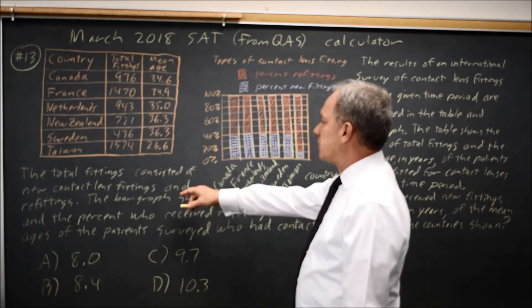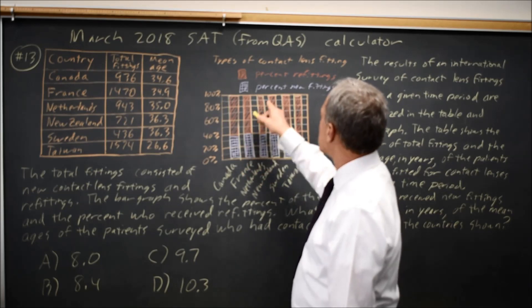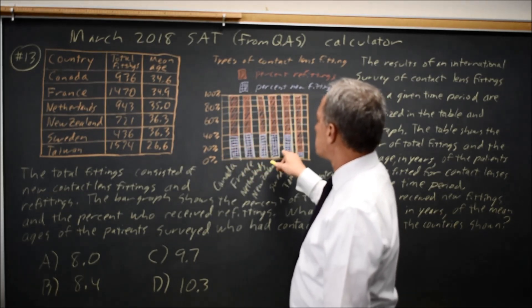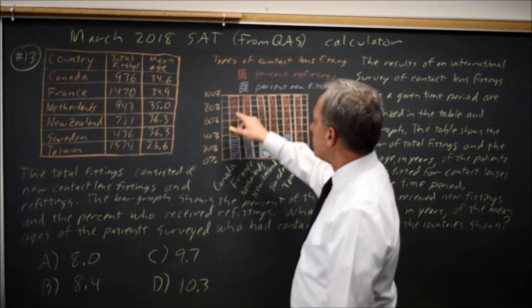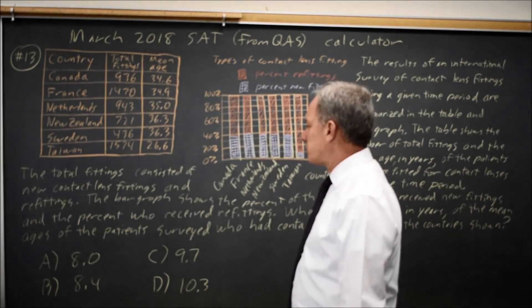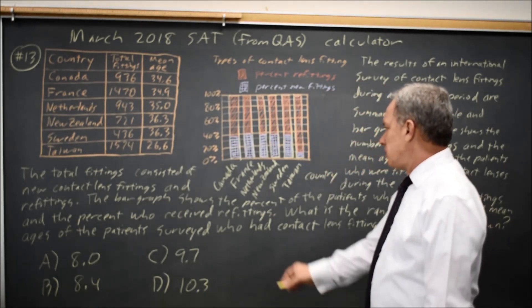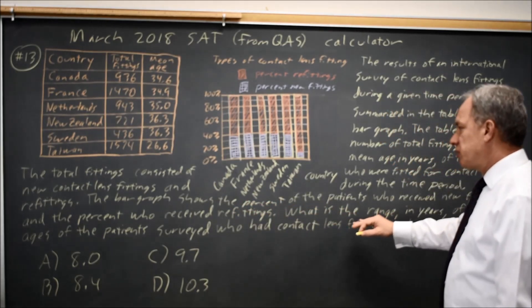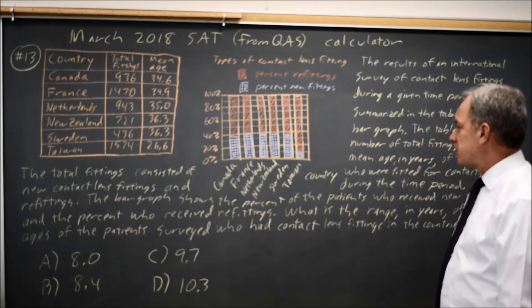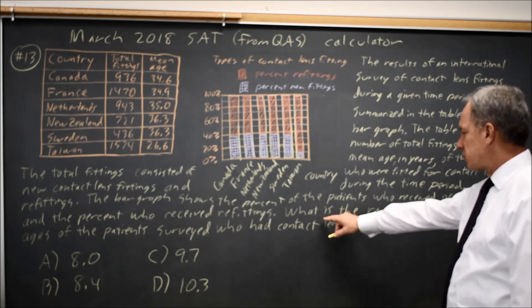Total fittings consist of new contact lens fittings which are the purple in the bar chart and refittings which are the pink in my bar chart. The College Board shows it differently. The bar graph shows the percent of the patients who receive new fittings and percent receiving refittings. Those percents add up to 100 percent in the bar chart.